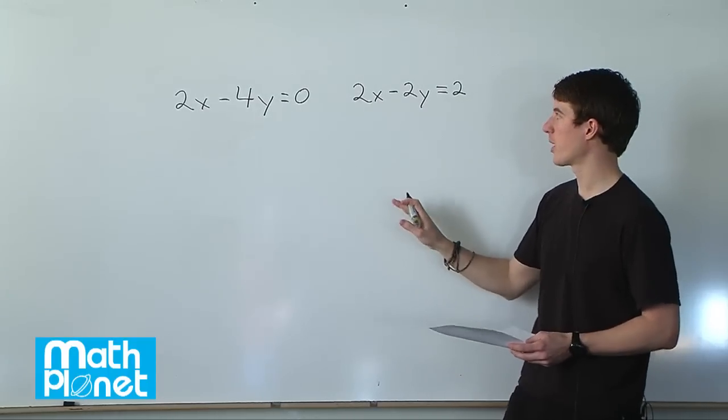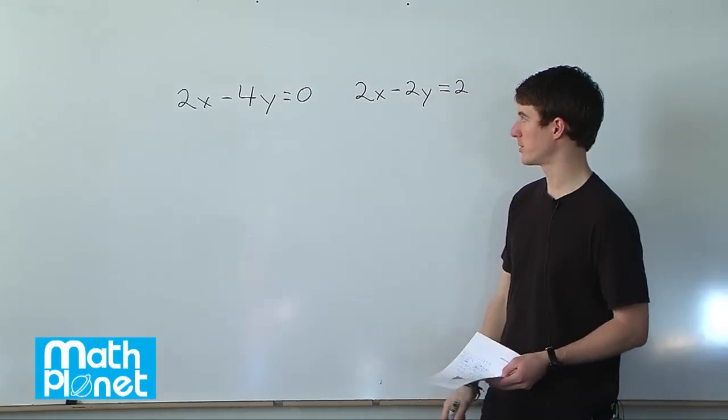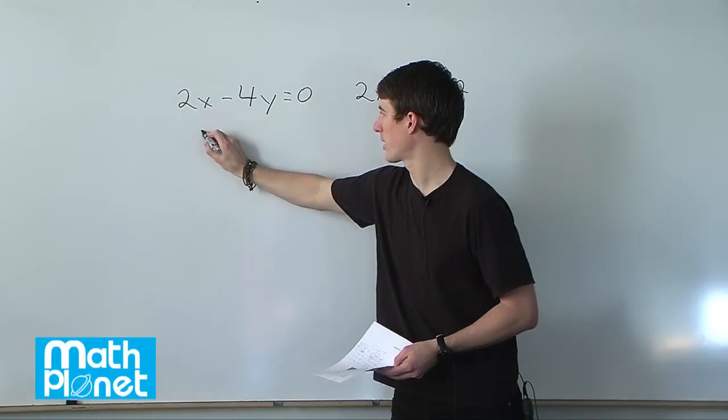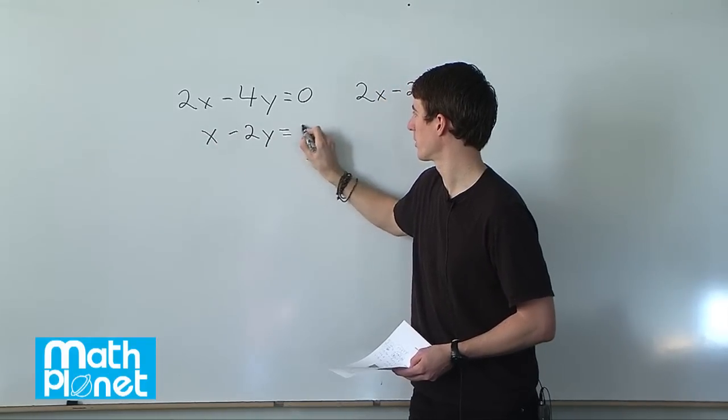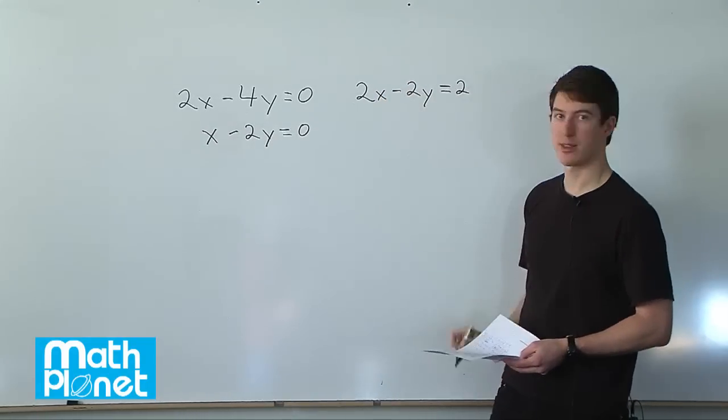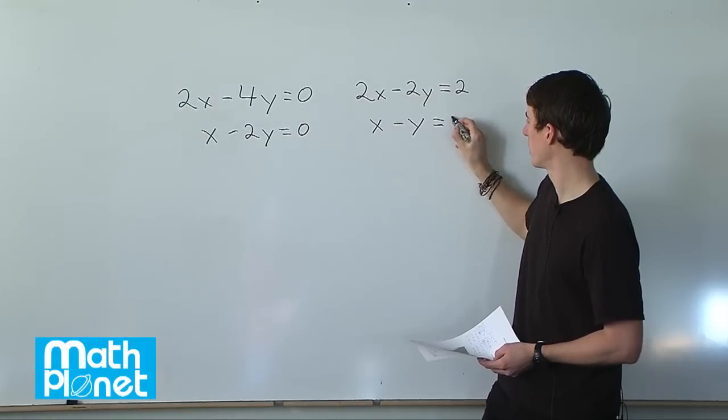The first thing I would do right away with this problem is just simplify both of these by dividing both by 2. If we divide this equation by 2, we get x minus 2y equals 0, and dividing both sides by 2 gives us x minus y equals 1.